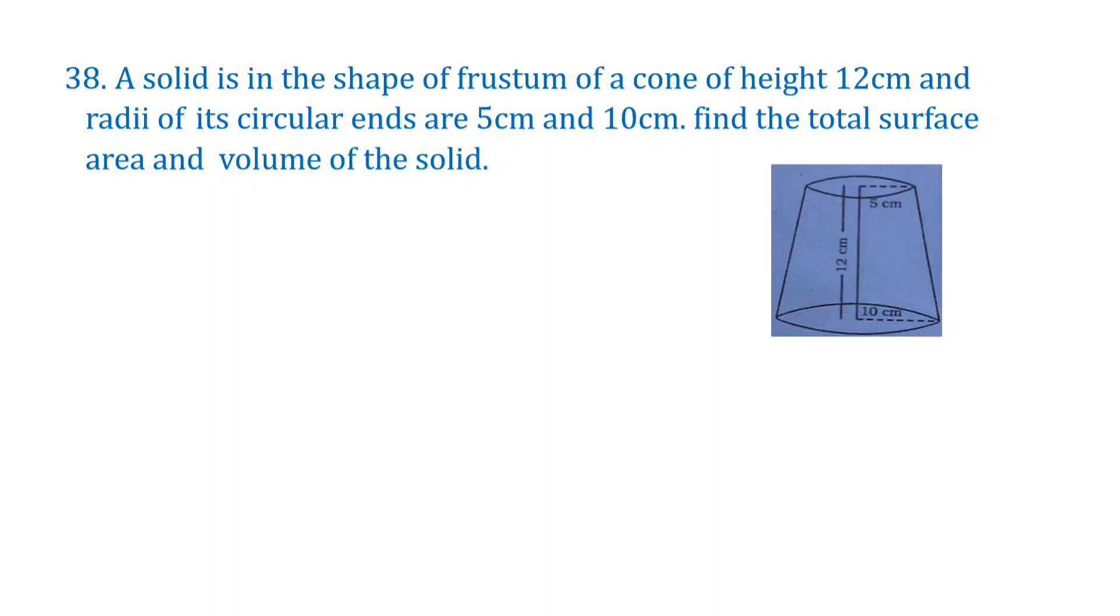A solid is in the form of a frustum of a cone. This is a frustum of a cone of height 12 centimeters, and the radii of its circular ends are 5 centimeters and 10 centimeters. Find the total surface area and volume of the solid.